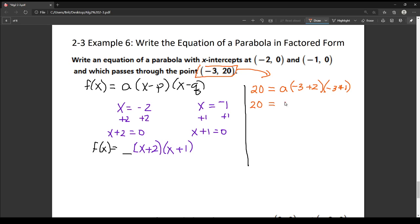So now, I'm going to simplify my parentheses, so negative 3 plus 2 is negative 1, and negative 3 plus 1 is negative 2, and then I'm going to multiply those together. So negative 1 times negative 2 is a positive 2, times a is 2a.